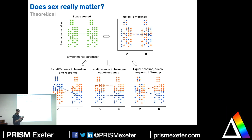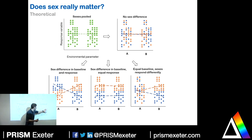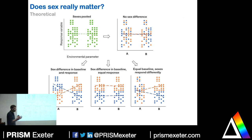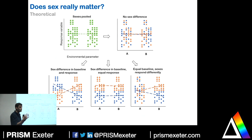What might we be missing? There are several biologically important phenomena we could overlook. First, males might be larger than females but respond the same way to the environment — failing to account for sex would miss that baseline difference. Second, males and females might be the same size normally but respond differently: with warming, males increase in size while females decrease. Third, they might differ in both baseline and response — females larger initially but males increasing size under future conditions while females decrease. These are all really important biological attributes we'd miss by pooling sexes.